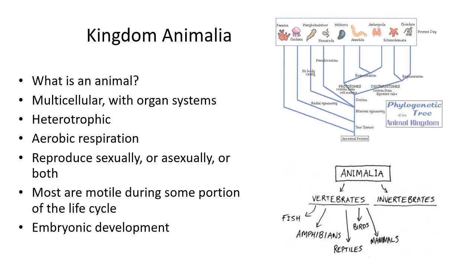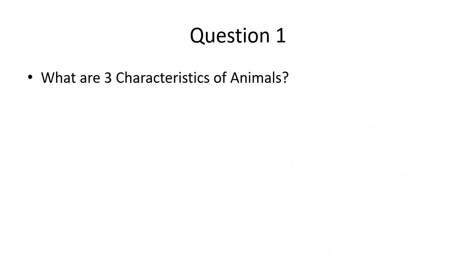Let's take a step back and talk about animals in general. Animals are multicellular organisms — multicellularity allows specialization in organs and tissues. They are heterotrophic, meaning they can't make their own food through photosynthesis or chemosynthesis and must eat other things. They have aerobic respiration with mitochondria, allowing them to use oxygen for energy. Animals generally reproduce sexually, sometimes asexually as well, and most can move during some part of their life cycle.